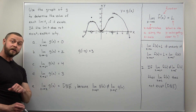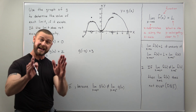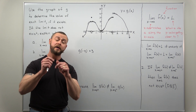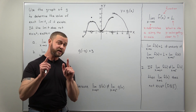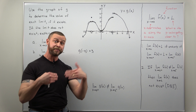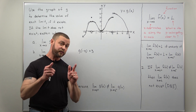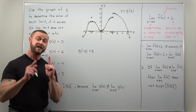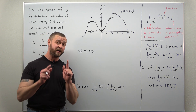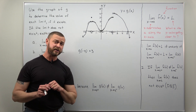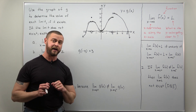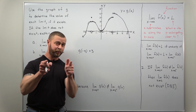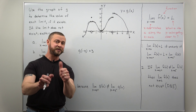Four of these five limits exist; the last one, part E, does not exist. This is a standard question in a calculus one course — its goal is to build your intuition and understanding of limits for the rest of the calculus sequence. Make sure you understand a problem like this; you will almost definitely see it on a quiz or exam. Hope you enjoyed the video — if you're learning a lot, support the channel, like and subscribe.